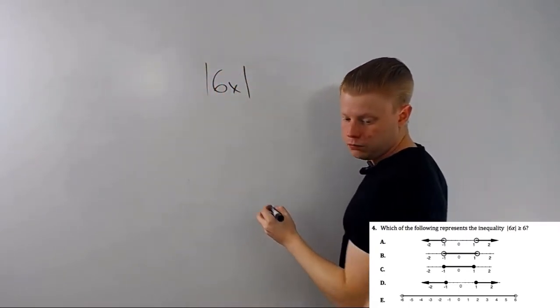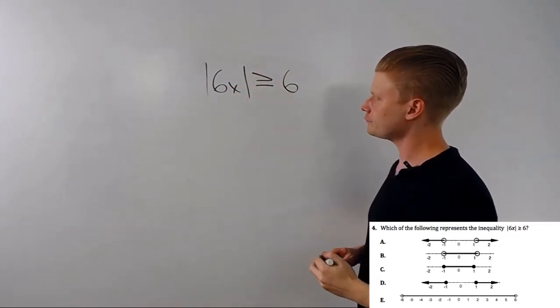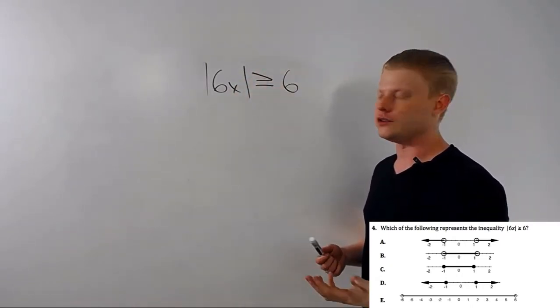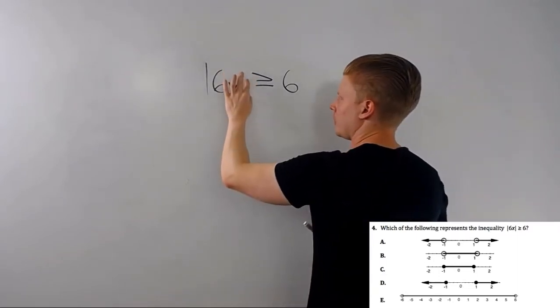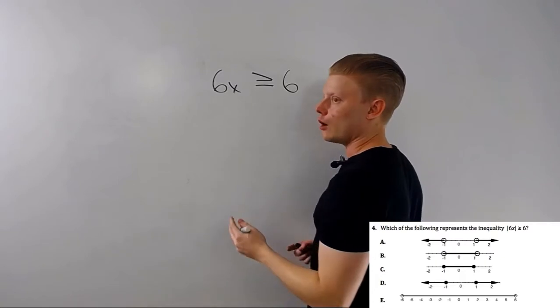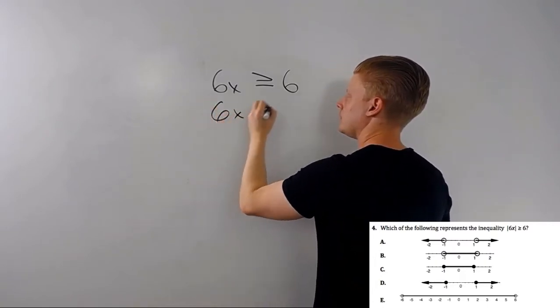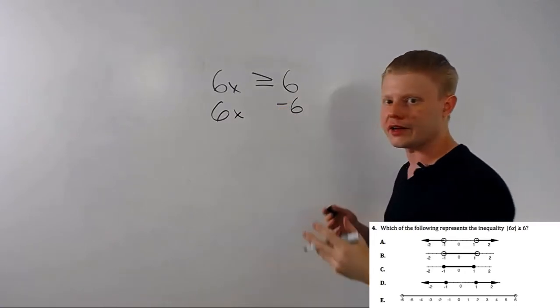Absolute value of 6x is greater than or equal to 6. Well, we know what we have to do. We have to get rid of these absolute value bars, right? Now here's the trick, the rub, whatever you want to call it. 6x is greater than or equal to 6, right? We just kind of did that before.